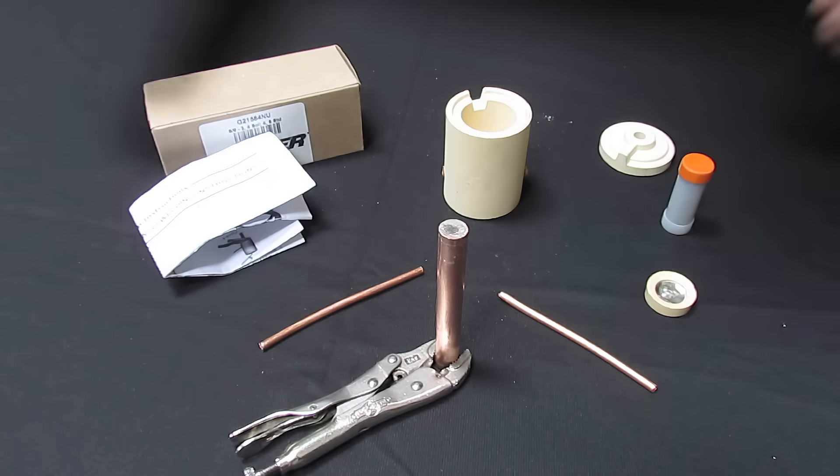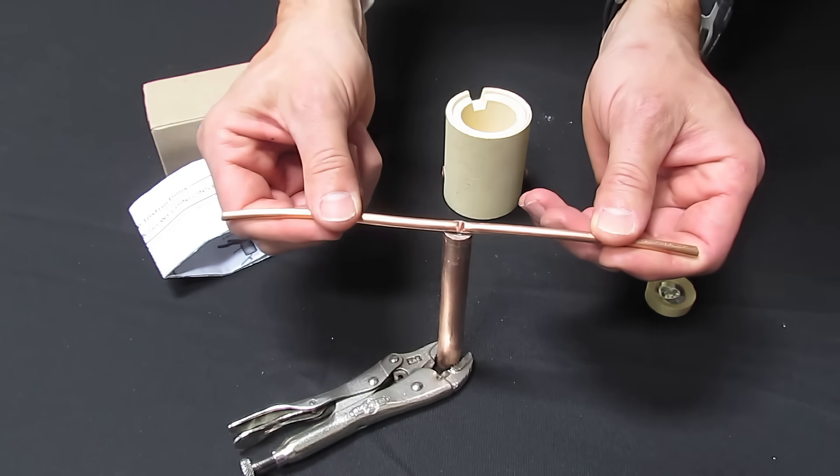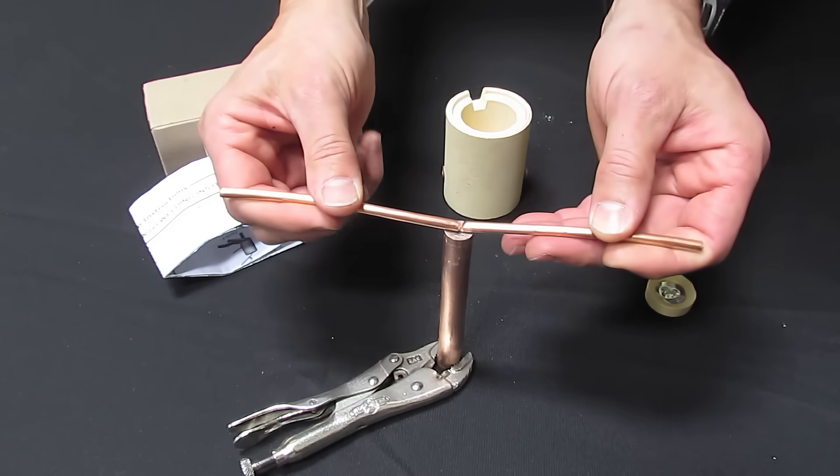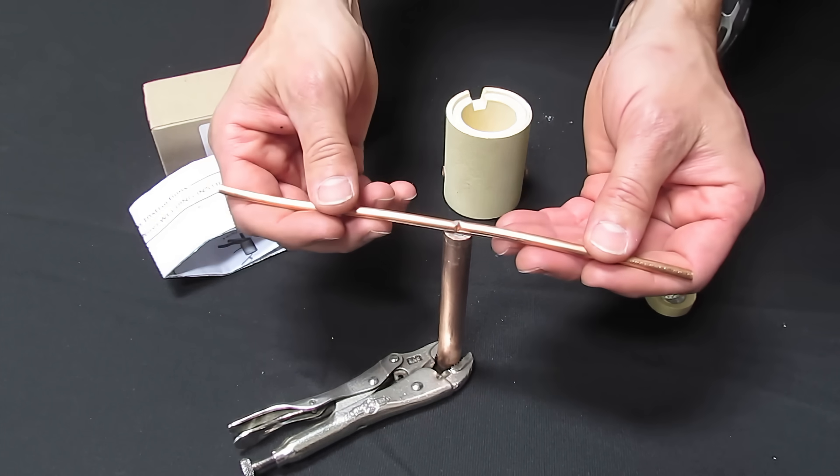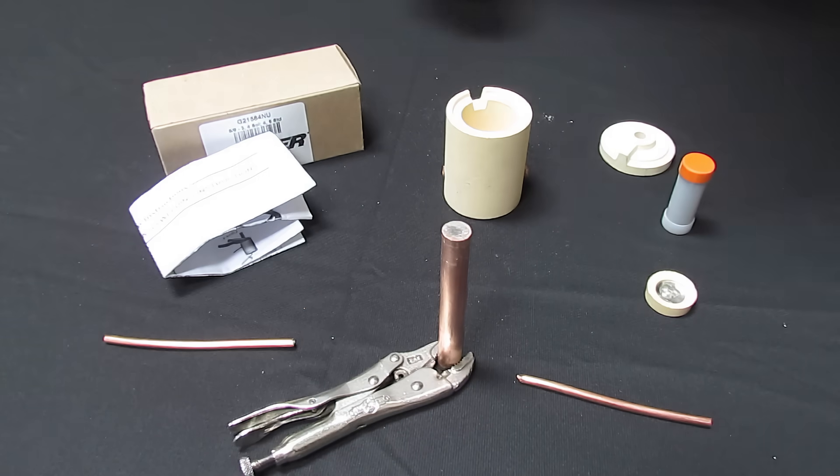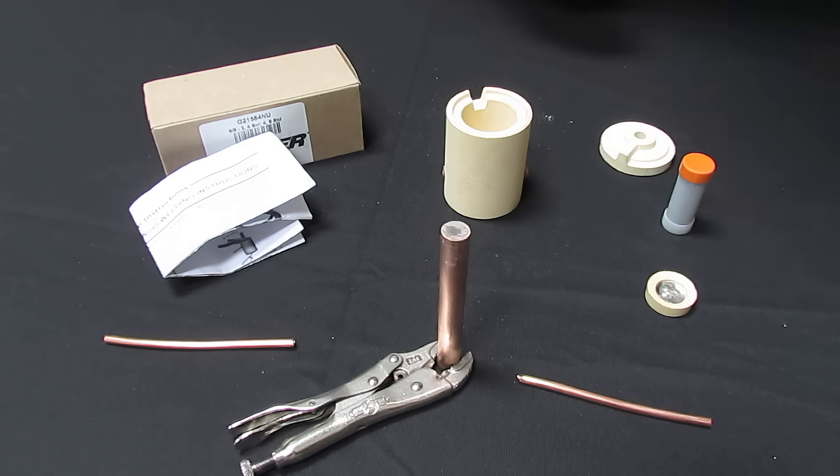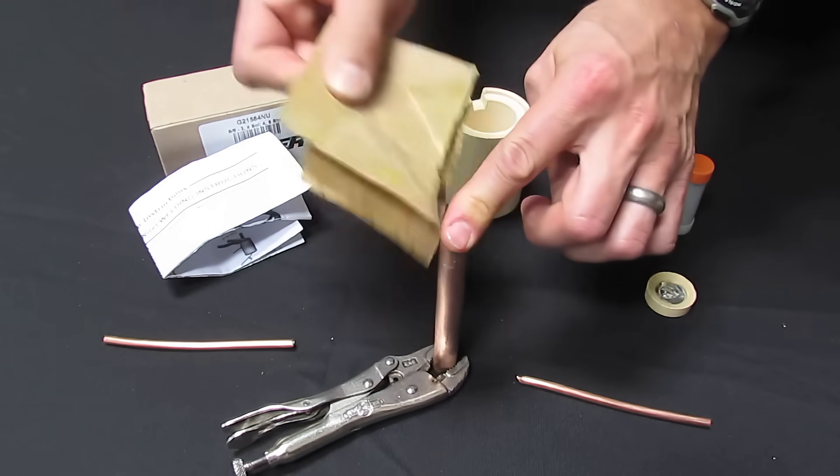So how do you set up the Harger Unishot? Well first, what we're trying to accomplish is we're going to weld our wires to the top of the ground rod with these wires interconnecting our various ground rods in our ground system. So the first thing you need to do after pounding the ground rod in is get it nice and clean. And the easiest way to do that is with either a wire brush or with some sandpaper.